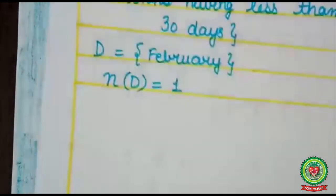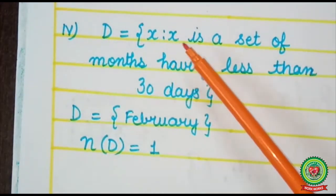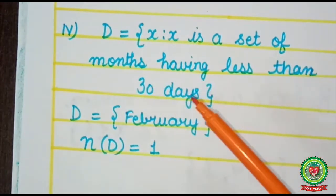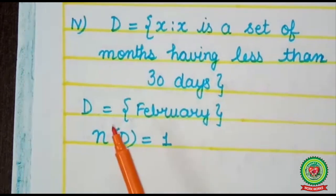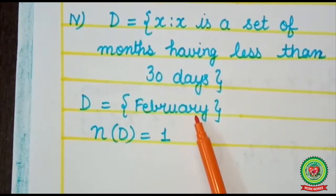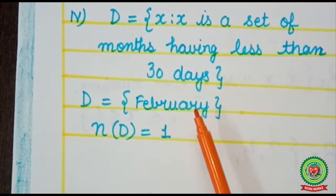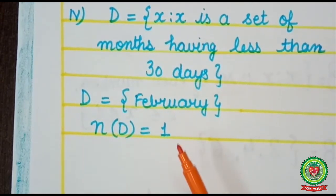Let's take one more example: set D = {x such that x is a set of months having less than 30 days}. Only one month has 28 days, or 29 days in a leap year. That month is February. So in roster form, set D = {February}. The cardinal number of D is 1, so n(D) = 1.